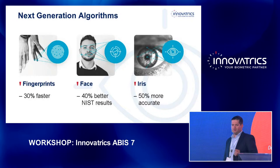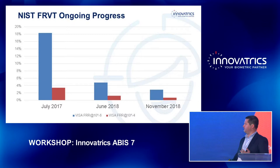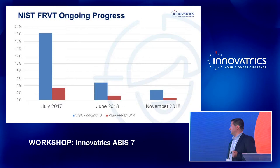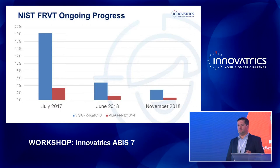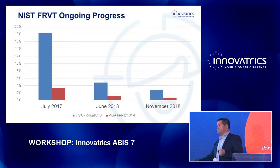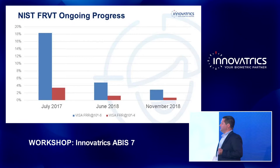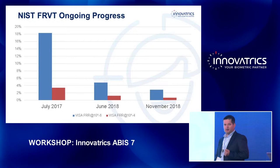Jan has already presented our NIST results, so I would like to present it from a different perspective. What you can see here is the NIST FRVT ongoing results for the Visa category — this is just the Innovatrix algorithm. Rio mentioned that version 5 did something and was somewhere in the middle of the list, then in version 6 it was already at the top. You can see the progress and evolution of facial accuracy over time.